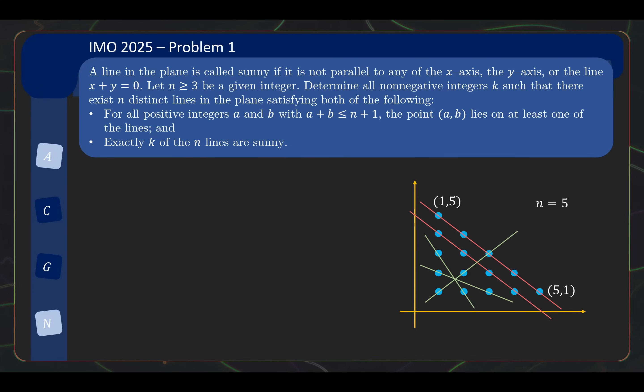So the question is how many of these lines that I'm covering the blue dots with are sunny. What is sunny? A line is sunny if it's not slope 0, slope infinity or slope minus 1. For example, the red lines here are not sunny because it's slope minus 1. The green lines are sunny. So in this cover scenario, I have 3 sunny lines, which means k equals to 3 is a possible answer here for n equals 5.